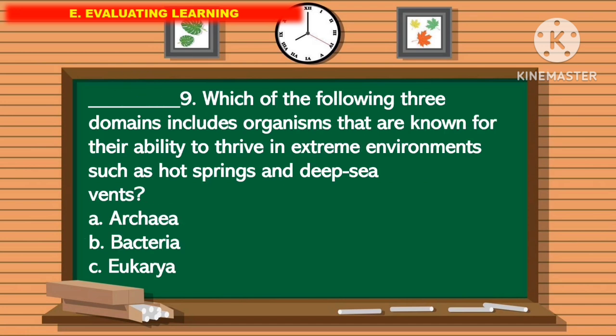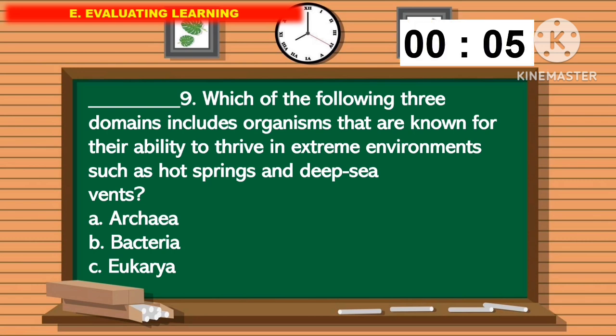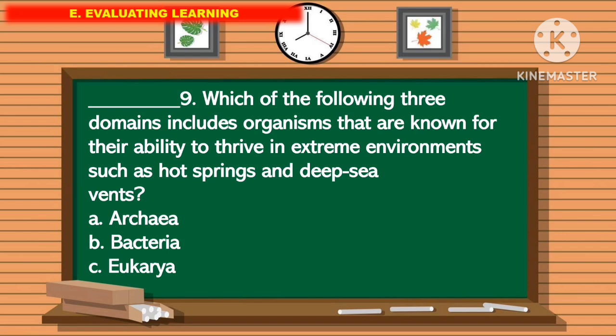For question number 9: which of the following three domains includes organisms that are known for their ability to thrive in extreme environments such as hot springs and deep sea vents? The correct answer is letter C.